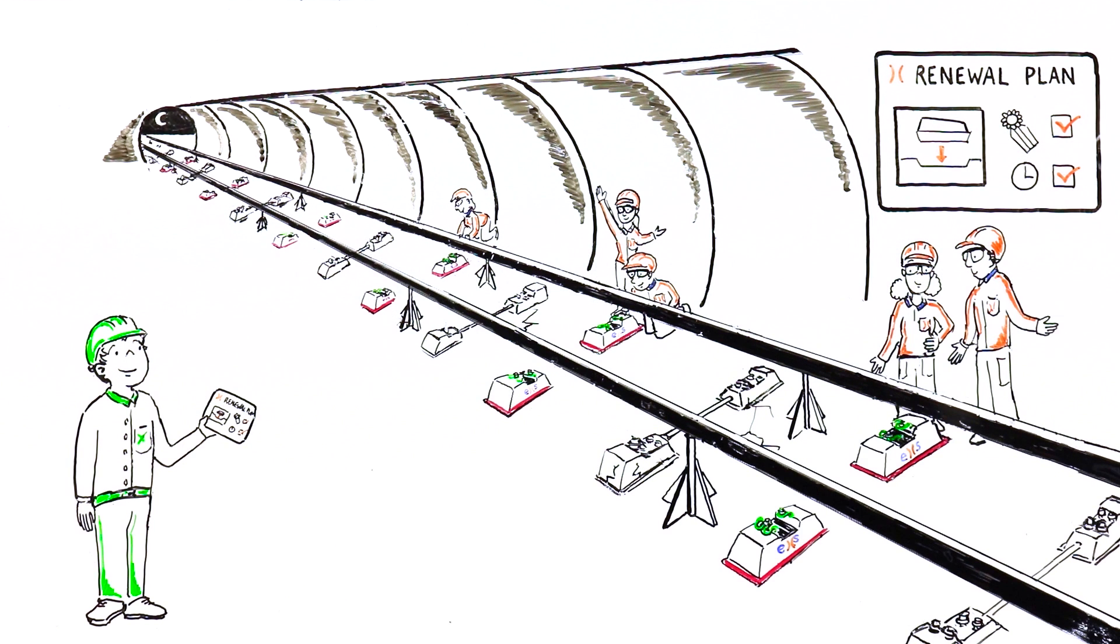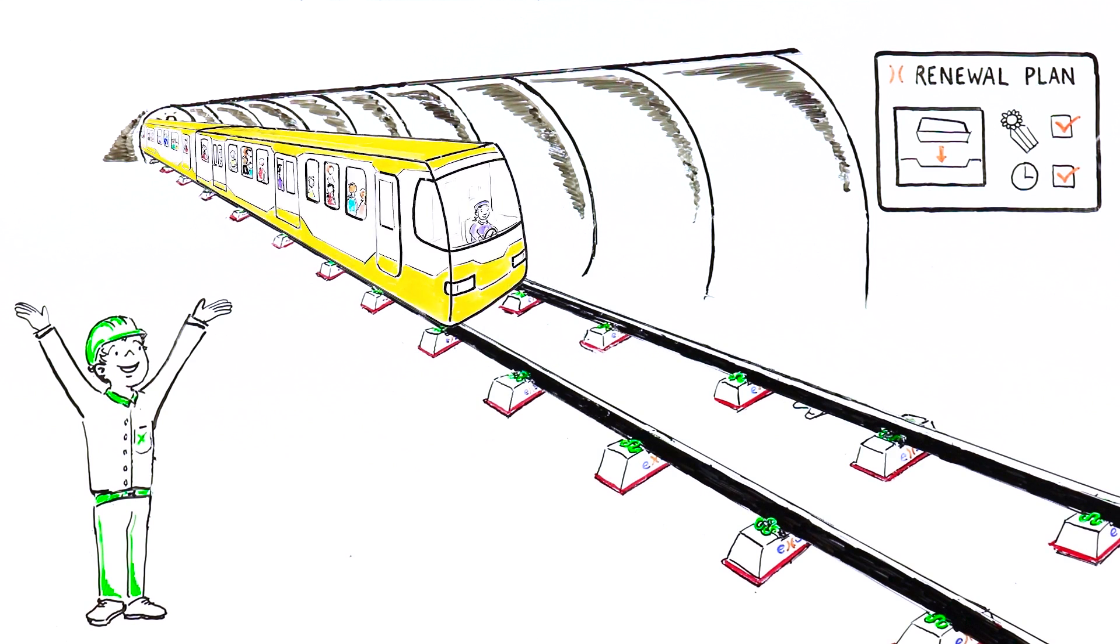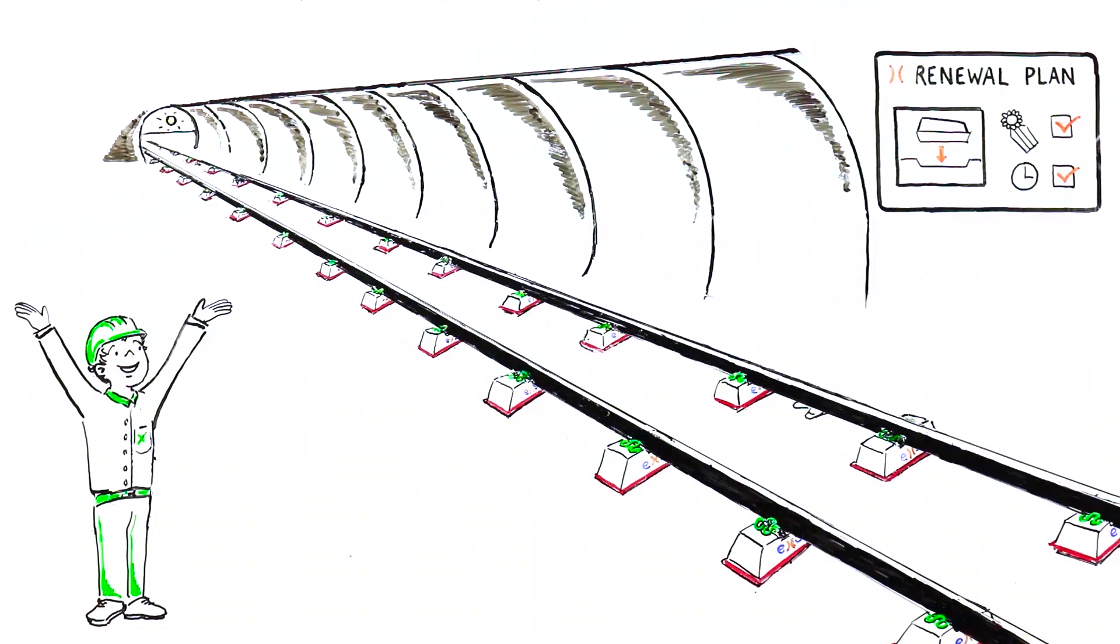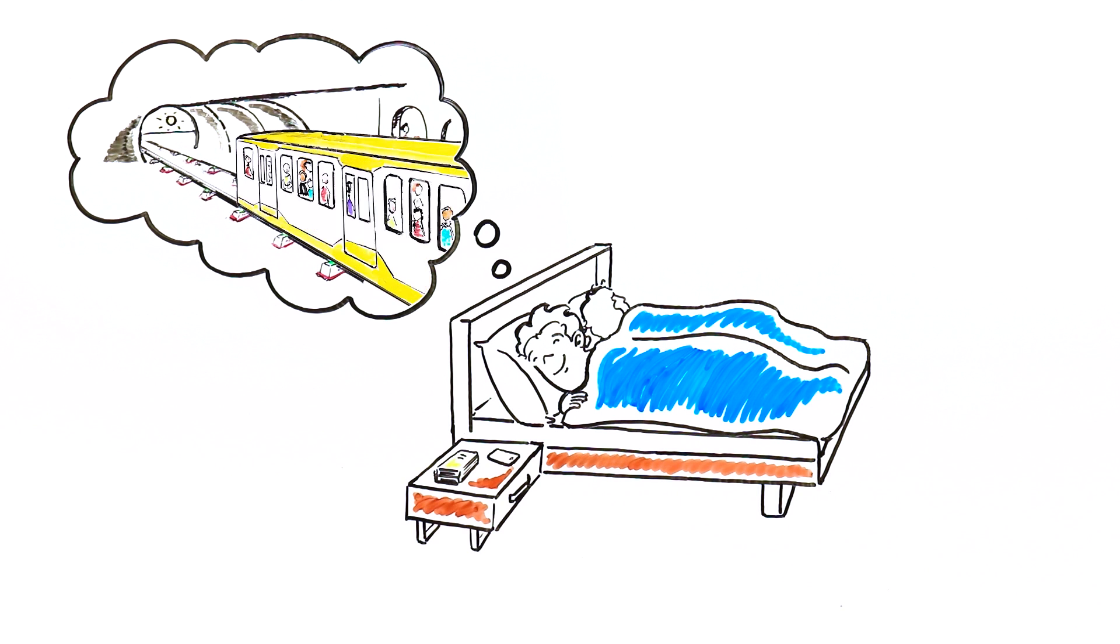In Tim's case, this is done in a few tightly planned night shifts. The replacement runs as smoothly as the metro does with the new block system in place. Tim doesn't have to worry about being called out of bed with a virtually maintenance-free track system in place, ready for millions of passengers for years to come.